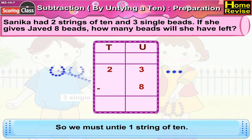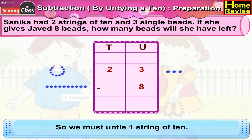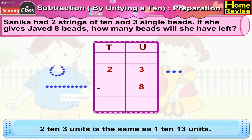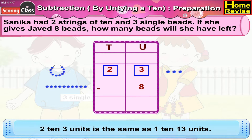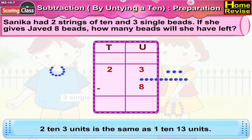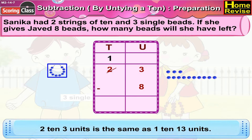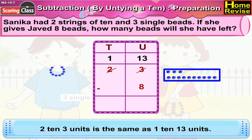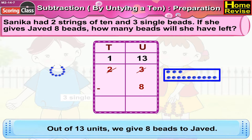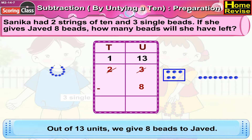So we must untie one string of ten. Now, we have two tens, three units. It is the same as one ten, thirteen units. Out of thirteen units, we give eight beads to Javed.